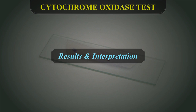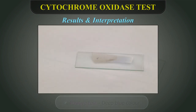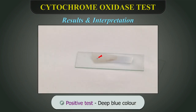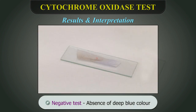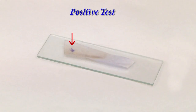Results and Interpretation: Deep blue colour at the site of inoculation is indicative of a positive test. A negative test is indicated by absence of deep blue colour at the site of inoculation. As the test sample turns the disc deep blue at the site of inoculation, similar to the positive control, the test organism can be reported as oxidase positive.